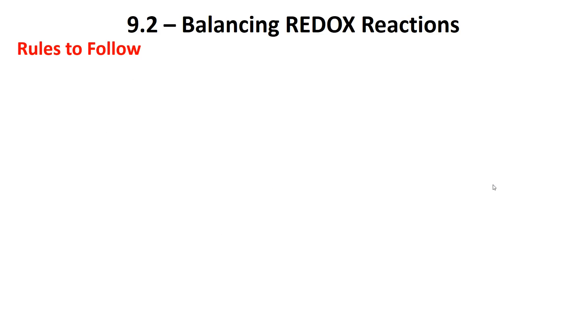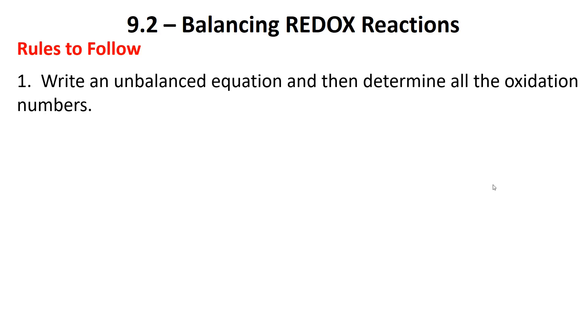If they're participating in the reaction, they'll need to be used in the balanced equation. So we've got some general rules to follow, and they don't apply to every example, but you use them as needed. First, we're going to write an unbalanced equation and determine the oxidation numbers. If you're not sure what that is, it was in a previous video for 9.1.